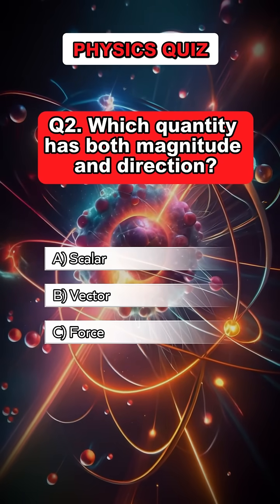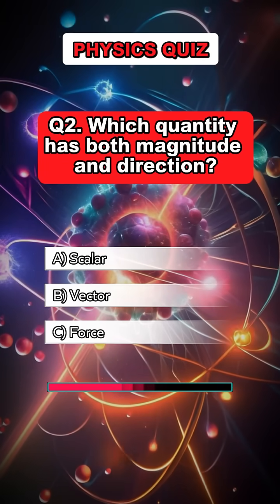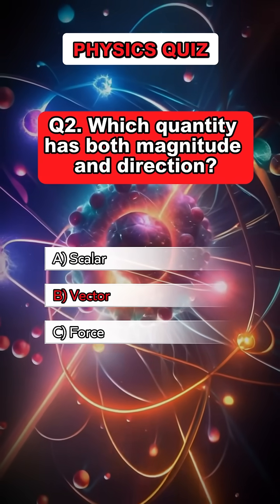Question 2. Which quantity has both magnitude and direction? Answer B. Vector.